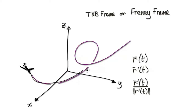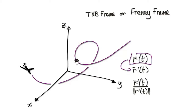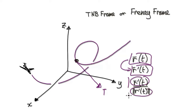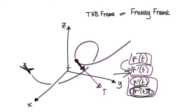Imagine the plane moving along here. Currently it's here. If you differentiate the position vector, it will give you the tangent vector, which is always in the direction of motion. If you divide the tangent vector by its magnitude, it will then give you your unit tangent vector — a vector of length 1.